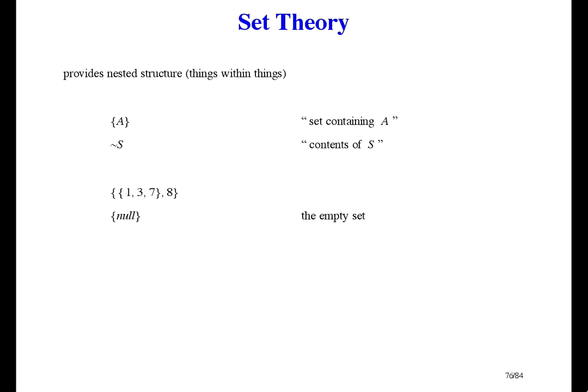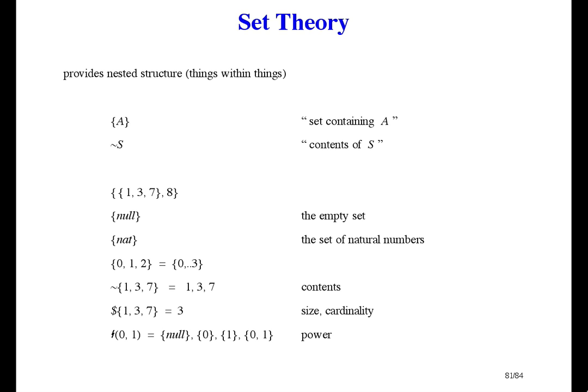The empty set ends up looking like this. Which isn't the standard notation, but I can't help it. And the set of naturals looks like this. The set containing the first three naturals can be written either of these ways. Here the contents operator gives us the contents of a set. The dollar sign is being used as the set size or cardinality operator, instead of the standard pair of vertical lines. And the power operator gives us all sets whose elements come from its operand.